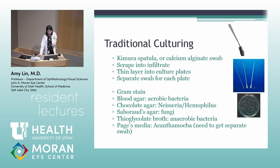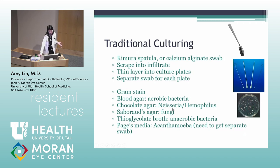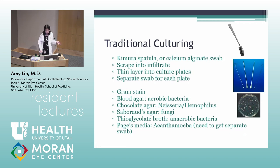Culturing methods: traditionally a Kimura spatula or calcium alginate swab is used to scrape into the infiltrate and plate onto culture plates — blood agar for aerobic bacteria, chocolate agar for Neisseria and Haemophilus, Sabouraud's agar for fungi, thioglycolate broth for anaerobic bacteria, and Page's media for acanthamoeba (which comes in a tube without its own swab, so you need a separate one). Each plate requires a separate swab.